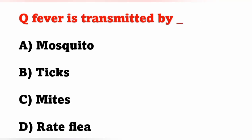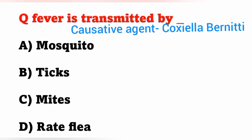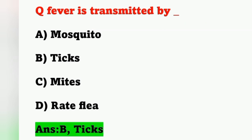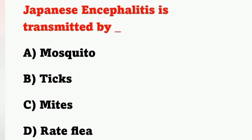Next question: Q fever is transmitted by? Options: A) Mosquito, B) Ticks, C) Mites, D) Rat flea. Q fever is a type of zoonotic disease. The causative agent is Coxiella burnetii, and ticks act as both a vector and a reservoir. So Q fever is transmitted by ticks. Option B is the correct answer.